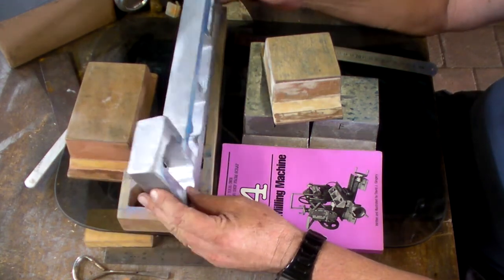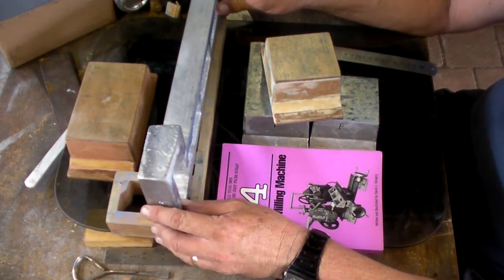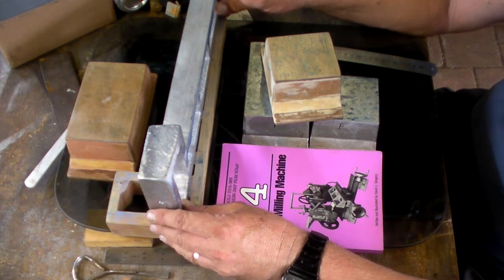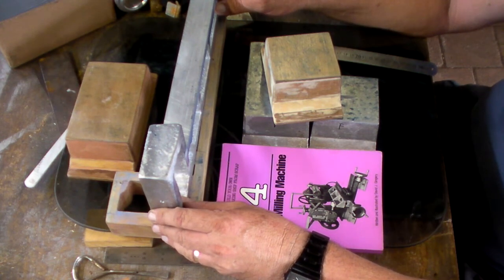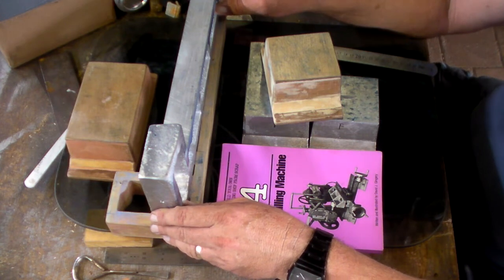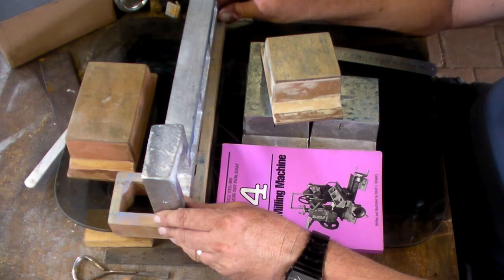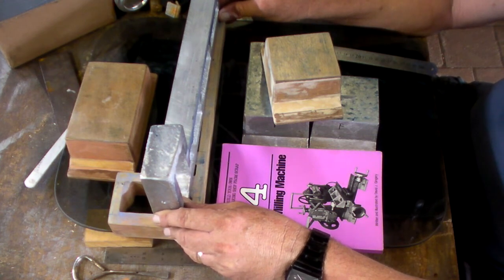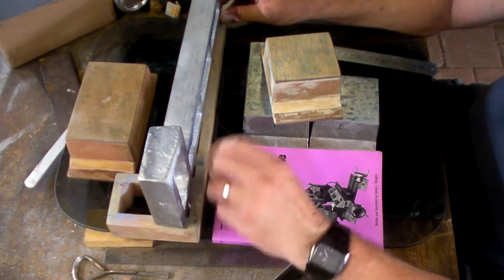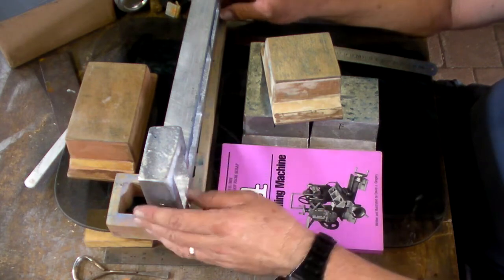Didn't realize how necessary that was until I did go to put the bedways on, only to find out I didn't have much overhang front or back. So I took off the material - about an eighth of an inch of material - I hand filed that all off and brought that down to size.